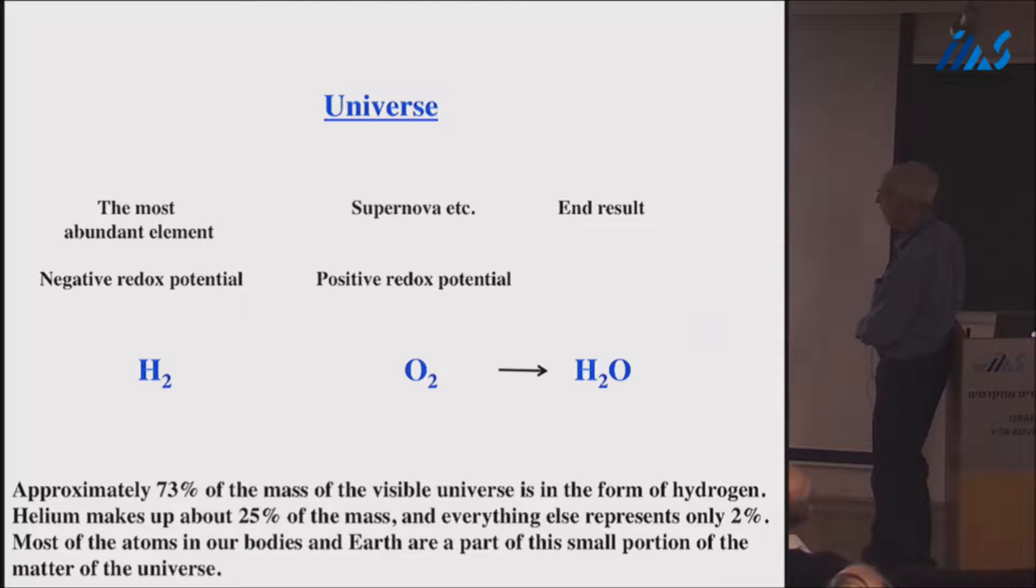The physics of the universe is very complicated, but the chemistry is very simple. The most abundant element is hydrogen. Oxygen is forming by abrupt cosmic events like supernova. But if you give it enough time, this reducing agent will reduce the oxygen to form water. Therefore, hydrogen is very abundant in the universe, and water is also quite abundant, but oxygen is extremely rare.